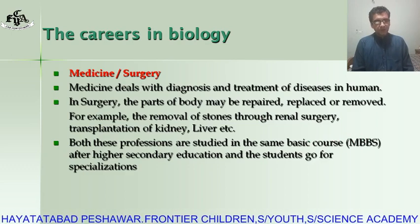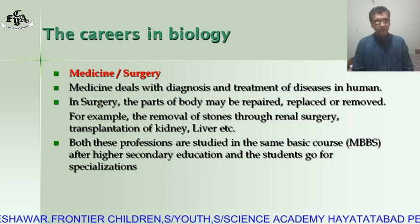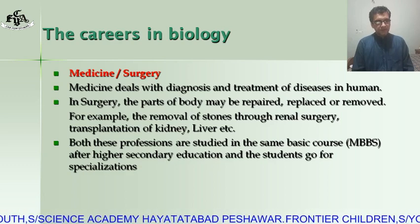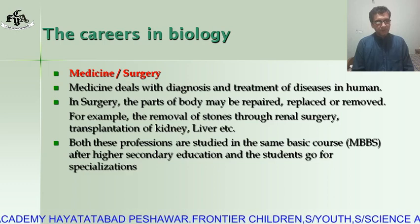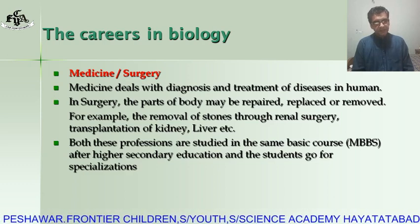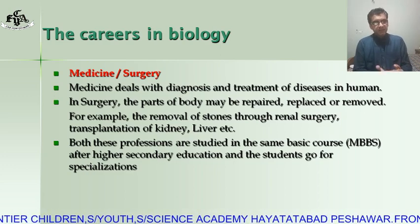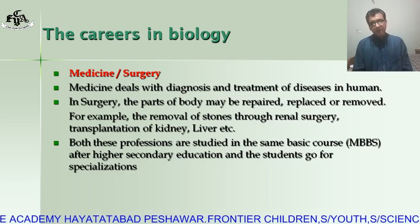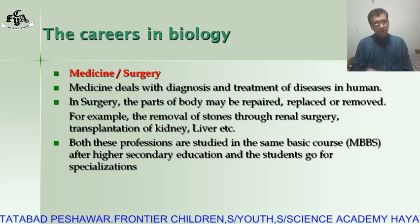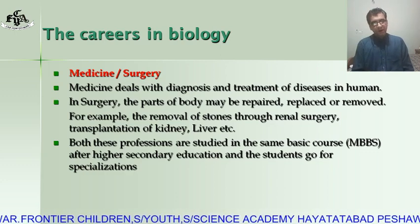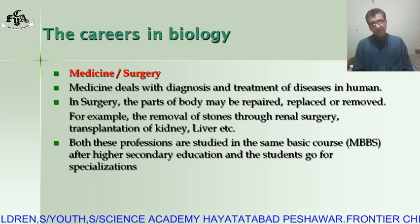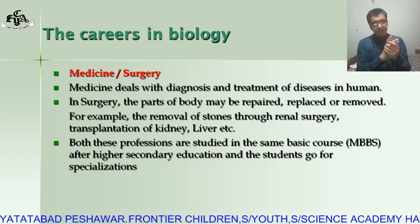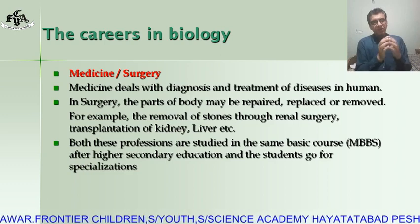What kind of profession will you adopt in future? There are some careers enlisted in your book. The first one is medicine and surgery. Medicine is a field where we deal with the diagnosis and treatment of diseases in humans, while in surgery the part of the body may be repaired, replaced, or removed — for example, the removal of a stone through renal surgery, transplantation of a kidney, etc.